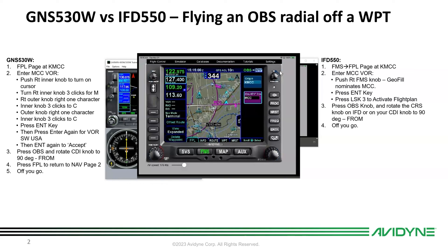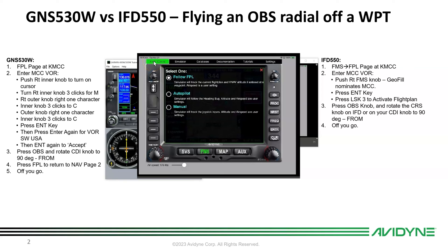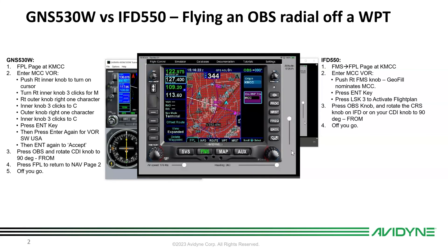Dial it all the way around to zero nine zero — it says 90 degrees from the waypoint, and you're ready to roll. In the airplane you'd just take off and you're good to go. It's actually fewer steps and geofill helps shorten the process as well. If you're practicing on the sim, one thing I like to do is go into flight control, put it on autopilot for a second — that gives me controls to dial in an altitude — and we're good to go.